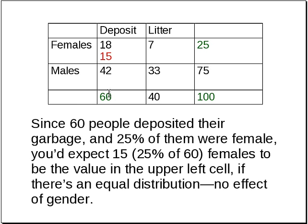So since 60 people deposited their garbage — that's the total for this column — and 25% of them were female, you'd expect, by pure chance, 15, or 25% of 60, females to be in the upper left cell. That's if there's an equal distribution with no effect of gender.